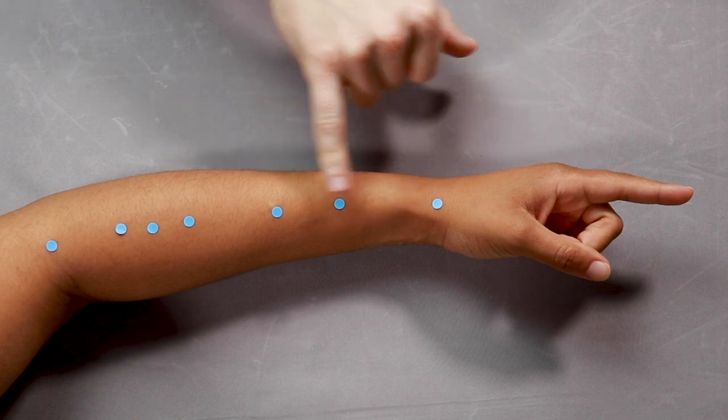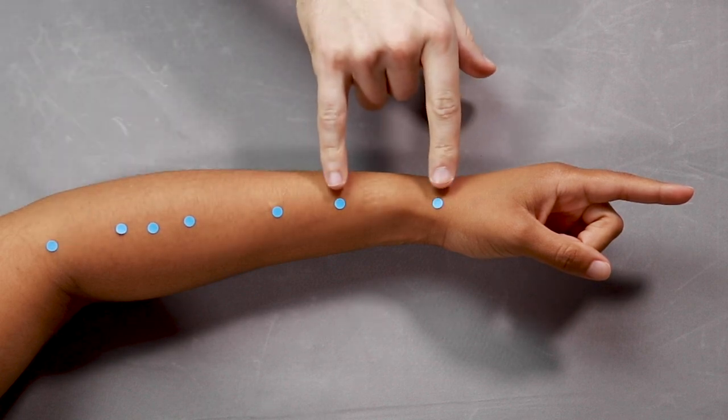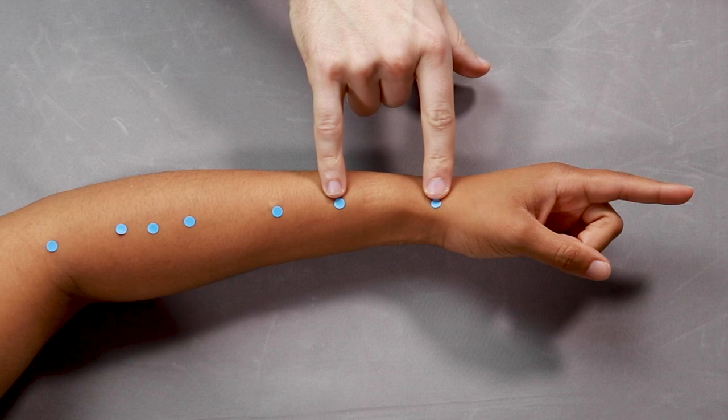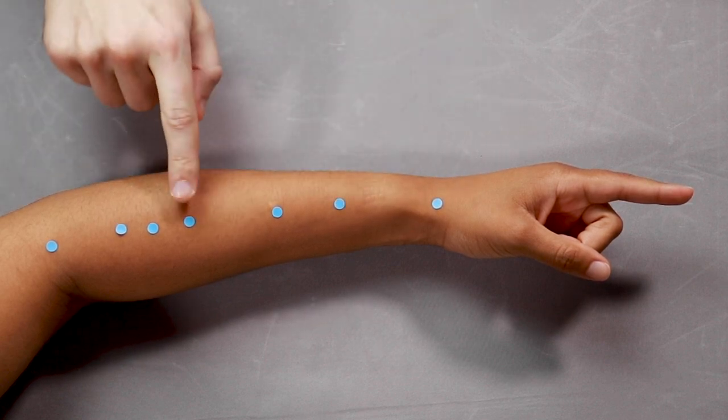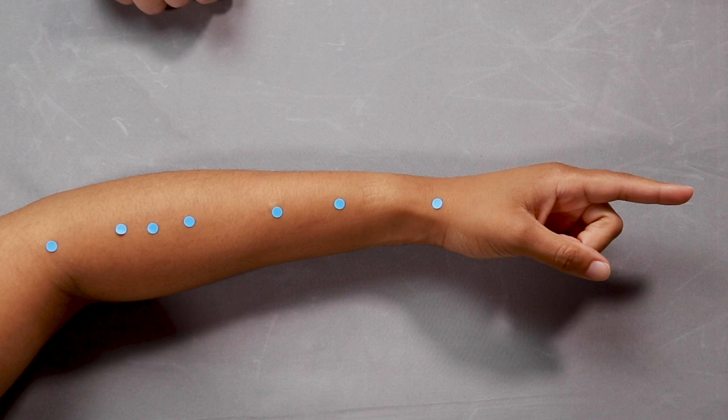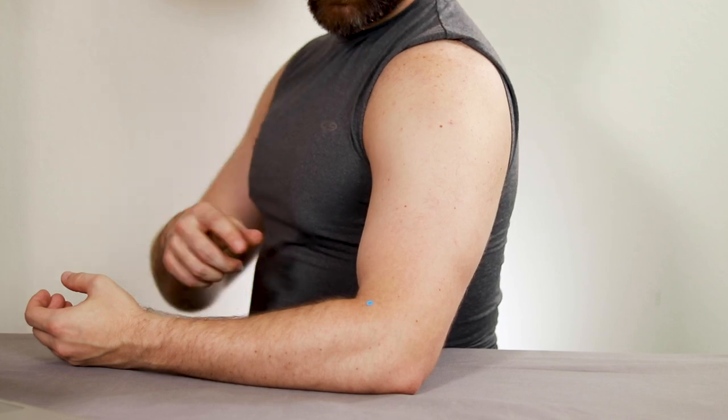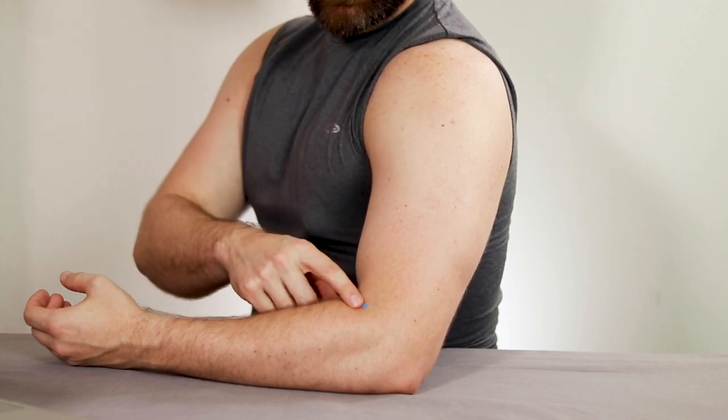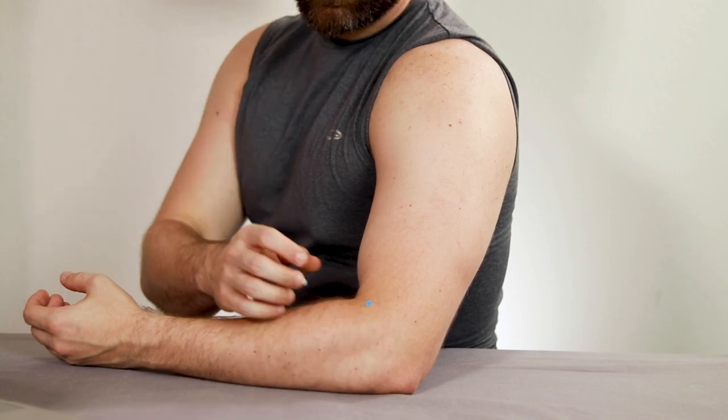Here we have all our points on the line from LI5 to LI11. LI6 is 3 cun up. LI7 is 2 cun above that. 8, 9, and 10 are all 1 cun apart. And then we have a 2 cun gap between LI10 and LI11. So here we're back with the upper arm. LI11 is located halfway between Lung 5 and the lateral epicondyle of the humerus.